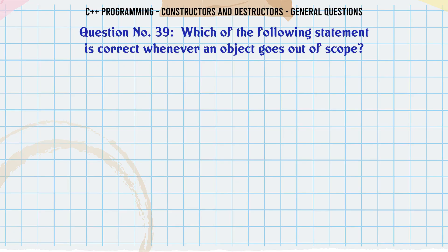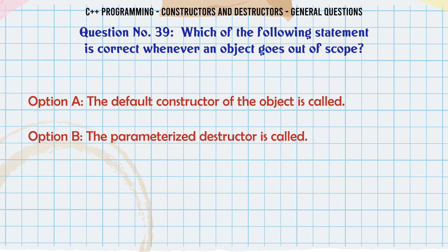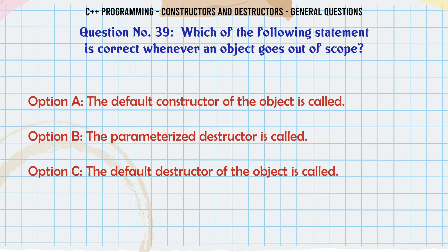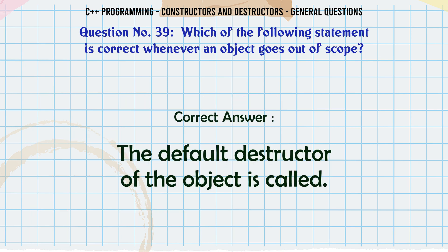Which of the following statements is correct whenever an object goes out of scope? A. The default constructor of the object is called. B. The parameterized destructor is called. C. The default destructor of the object is called. D. None of the above. The correct answer is The default destructor of the object is called.